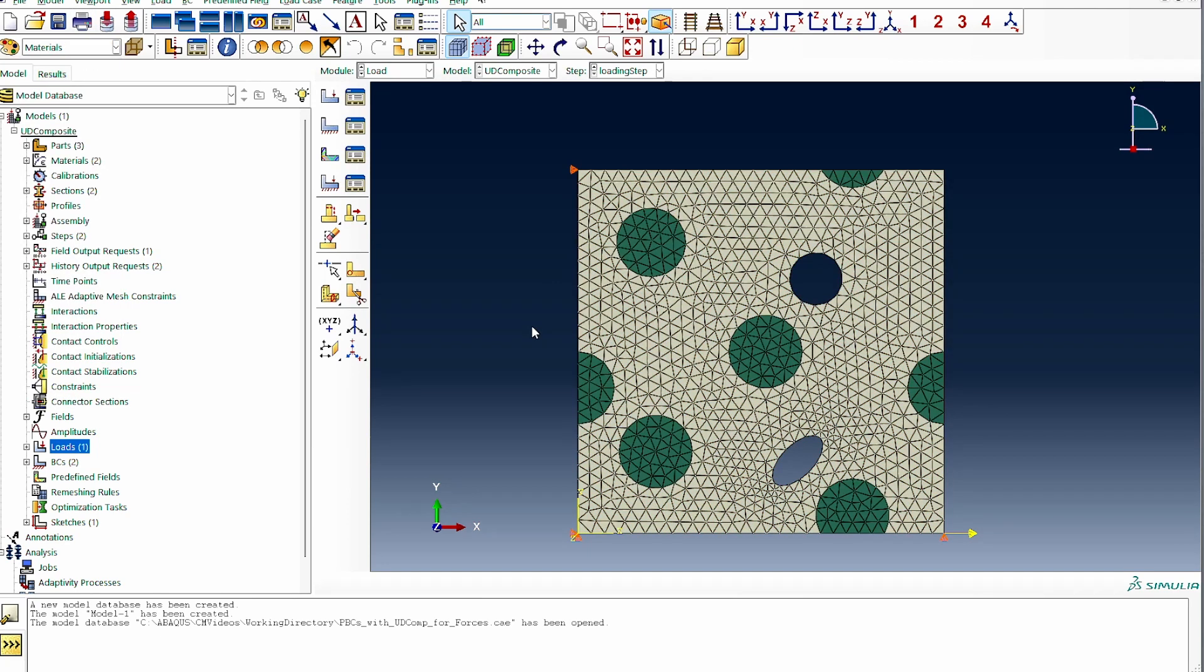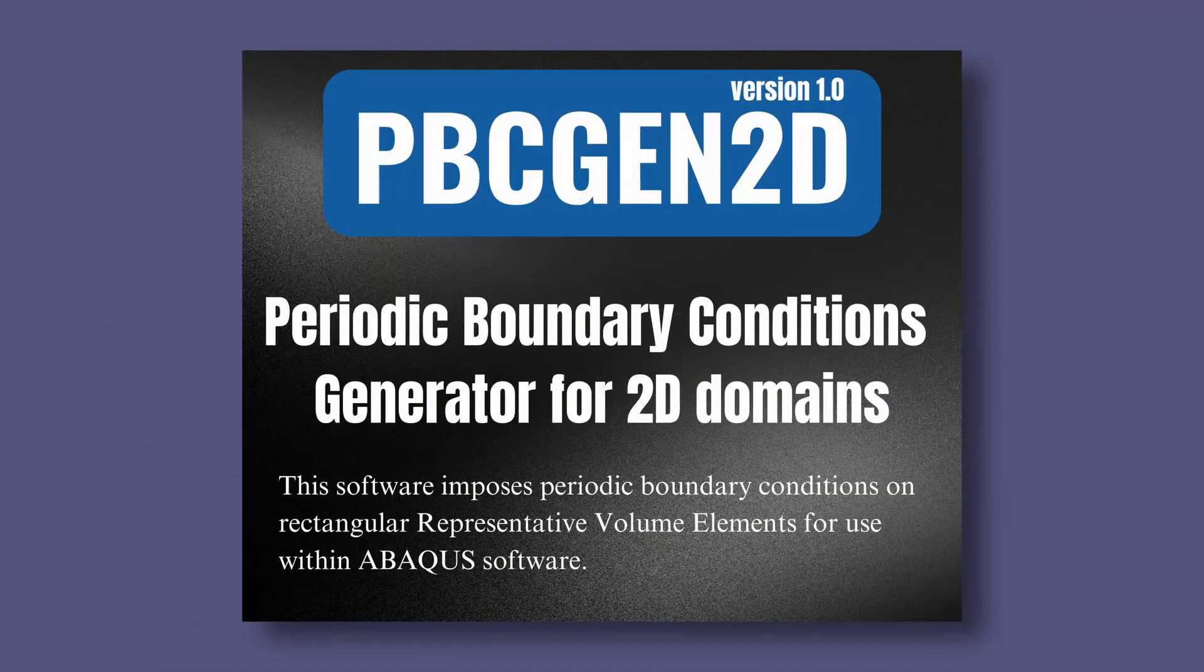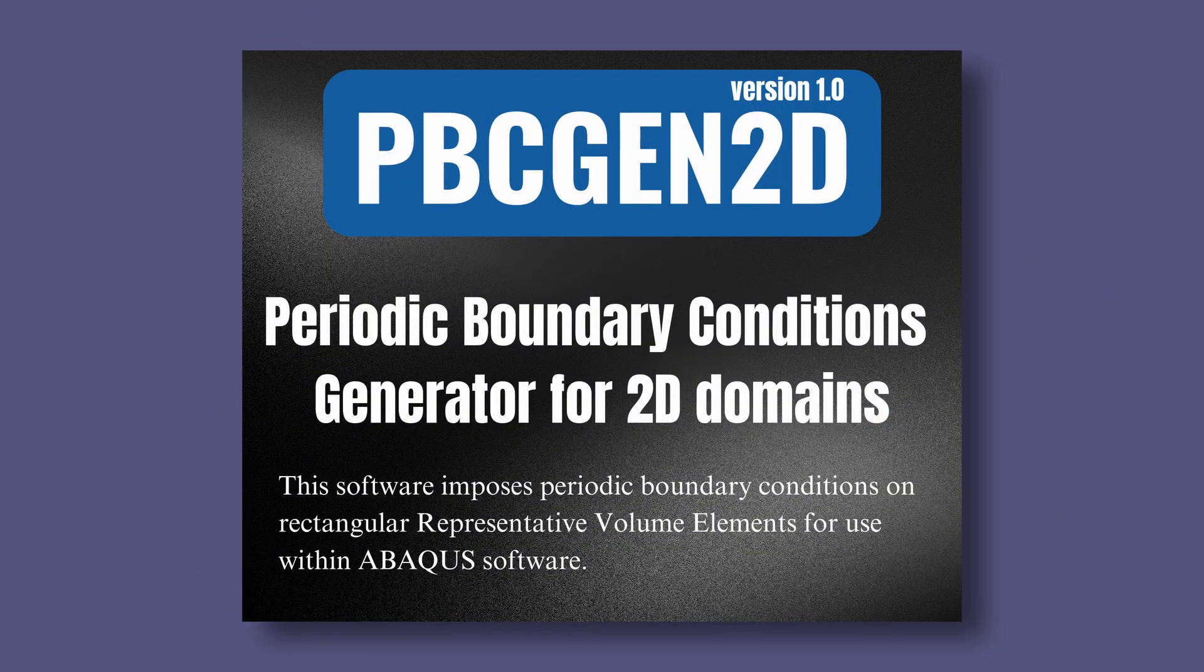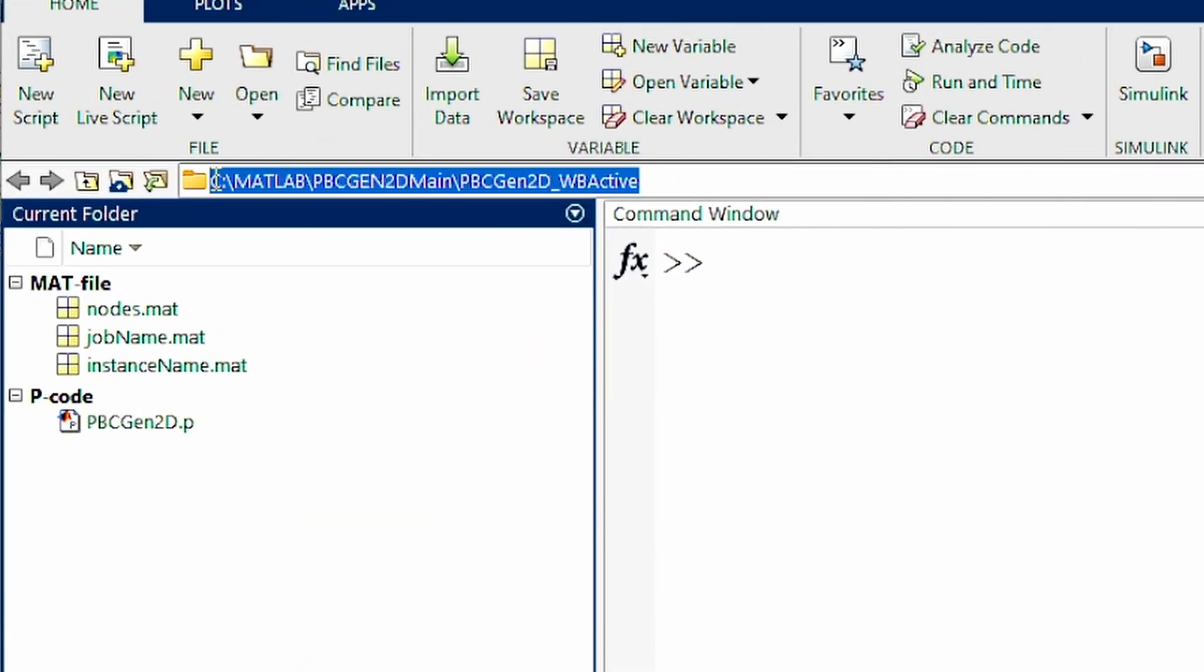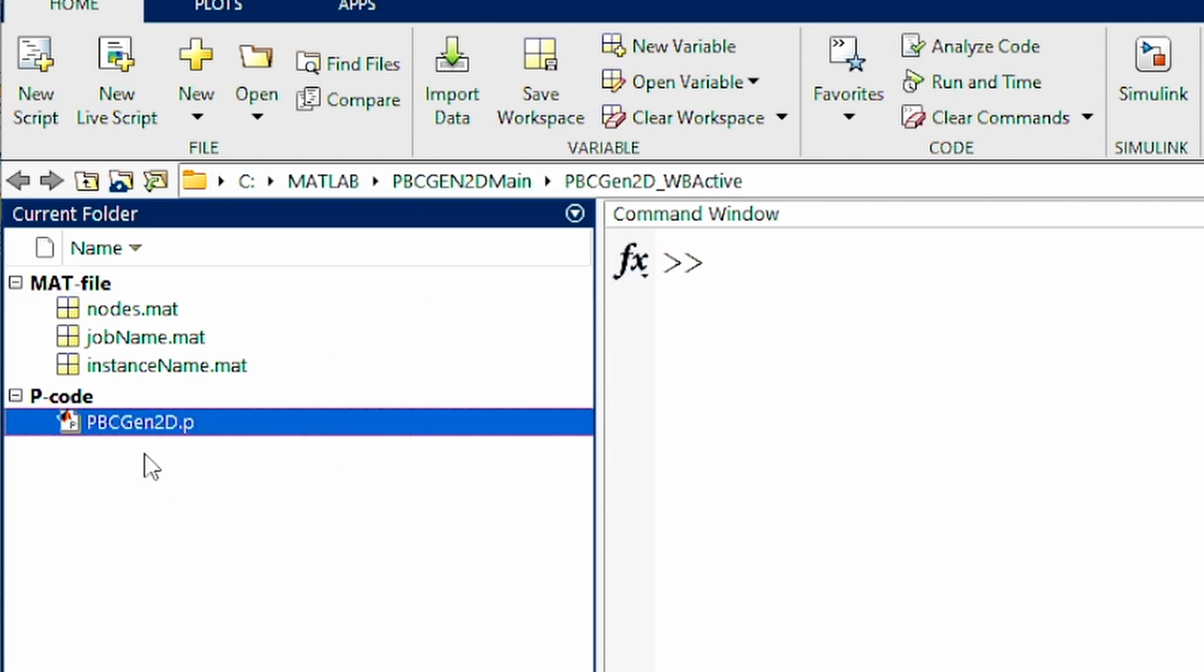I'll do 3e to the power 9, so 3 meganewton - really huge forces - and apply. The model is properly set, it's been meshed, and everything is fine. Now clearly the next step is to apply periodic boundary condition to this domain, but this is where you need a tool to do this. I already have this tool which is called PBCGEN2D, which will help you do this.